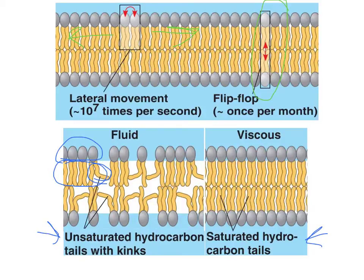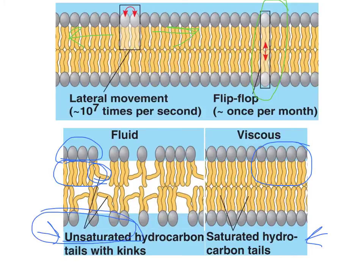Membranes with more saturated hydrocarbon tails are more viscous — more rigid. The phospholipids do not move as easily because they're packed in nice and tight, with all carbons bonded to all possible hydrogens, keeping tails straight. Saturated fats are solid at room temperature; unsaturated fats are usually liquid. Organisms that need to prepare for winter will add more unsaturated phospholipids to their cell membranes so they don't solidify in the cold.